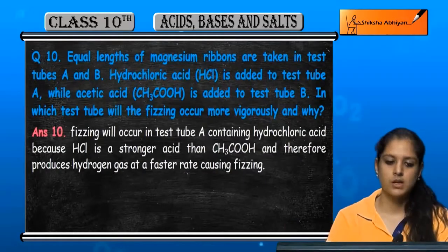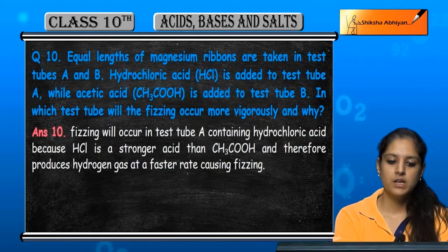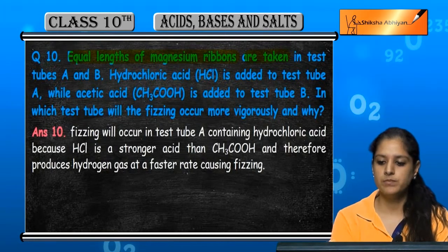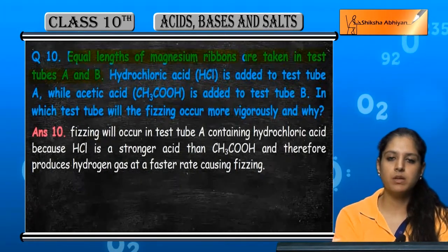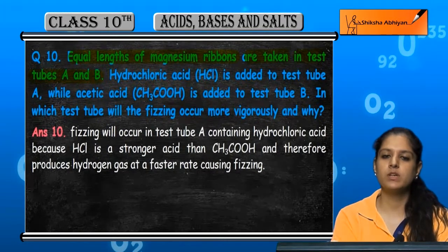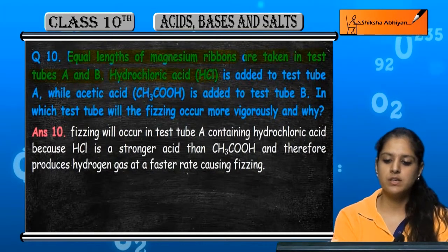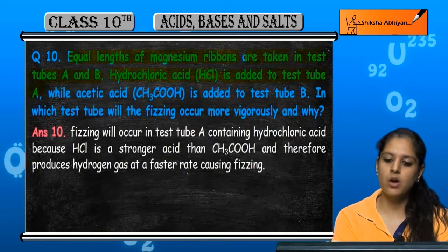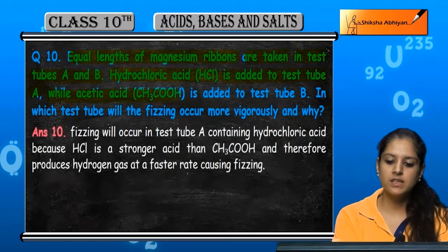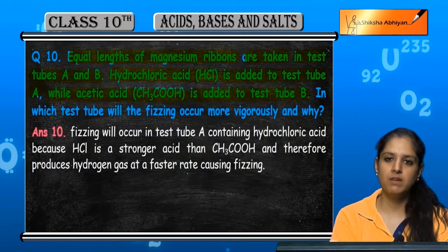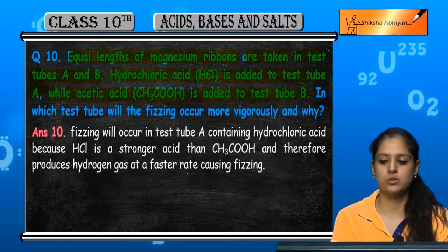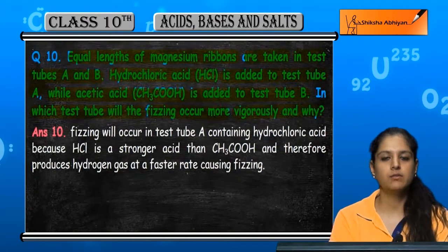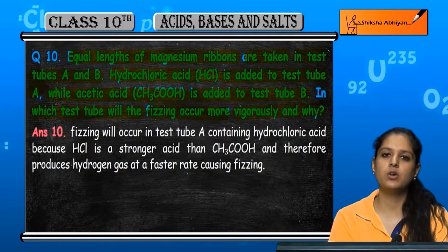Question number 10: Equal lengths of magnesium ribbon are taken in test tubes A and B. Hydrochloric acid (HCl) is added to test tube A, while acetic acid is added to test tube B. In which test tube will the fizzing occur more vigorously? Dono mein se kisme fizzing zyada hogi aur kyun hogi?